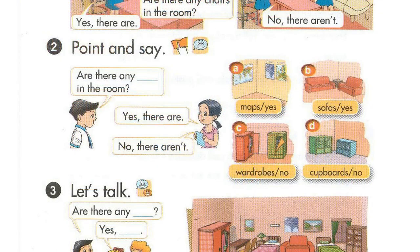Activity 2. Point and say. Are there any maps in the room? Yes, there are. Are there any wardrobes in the room? No, there aren't.